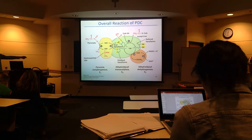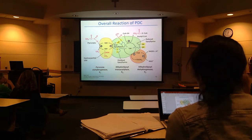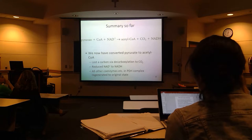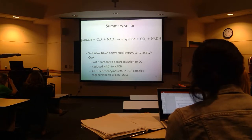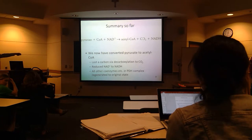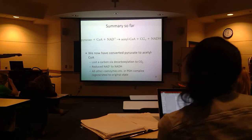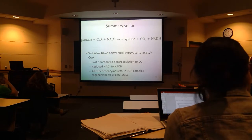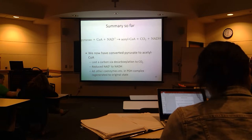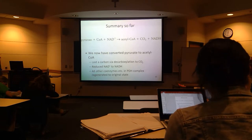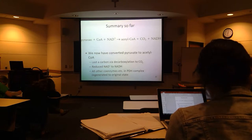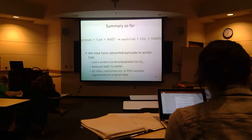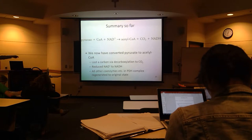So, pyruvate to acetyl-CoA — that's what's happening here. So now we have acetyl-CoA, and now we can get to the citric acid cycle. We do produce CO2, because that's one of the carbons that goes away from pyruvate. And we also technically produce NADH. So this is the overall balanced equation for what comes in as substrate and the products released from the pyruvate dehydrogenase complex — E1, E2, and E3 together produce all of this.